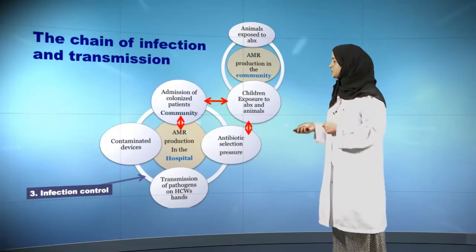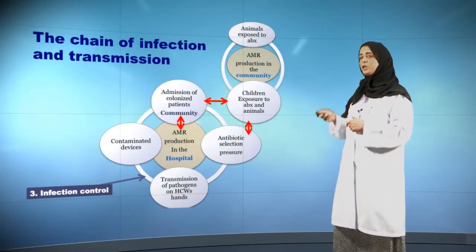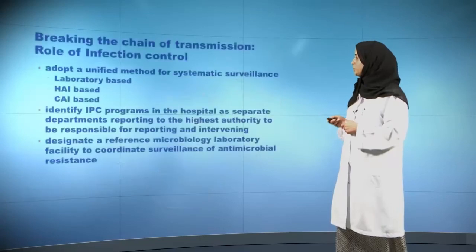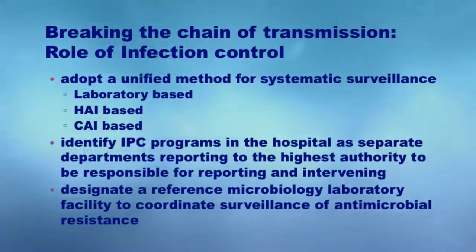Infection control is the overarching link between the transmission of these pathogens from patients who carry them, from equipment, to the inanimate surfaces where they may exist. Infection control plays a major role in breaking this chain of infection and transmission of antimicrobial resistance between patients, between patient and healthcare worker, and between the healthcare worker and household contacts within the community. There has to be systematic surveillance — hospitals should have their antibiograms — and I encourage each of you, whenever prescribing an antibiotic in a specific hospital, to ask the microbiology lab for the antibiogram so you can track the trend of emerging resistance over the years.